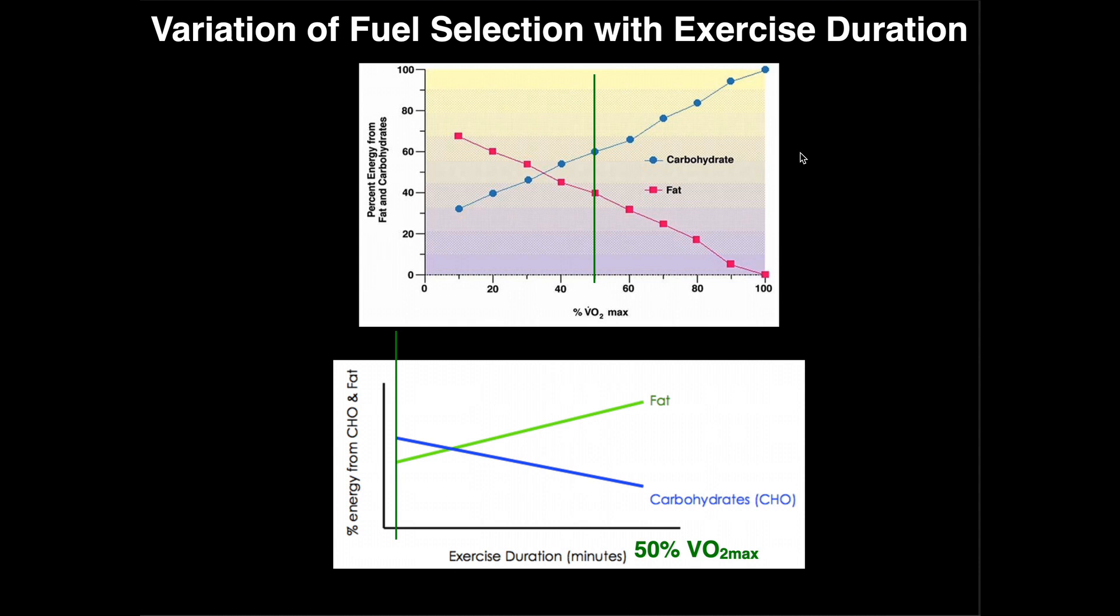With variation of the fuel source with exercise intensity, as you get to a higher intensity you rely more on carbs, less on fat. But for exercise duration at a constant exercise intensity, as the exercise goes on and on you have decreased reliance on carbohydrates and increased reliance on fat.